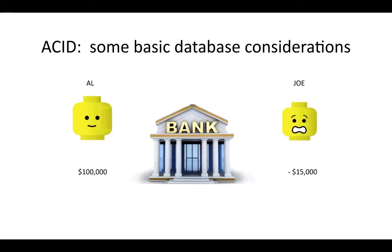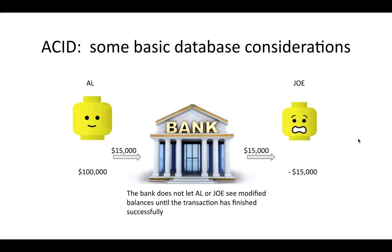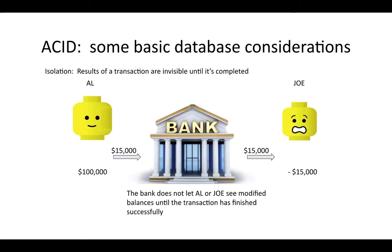For our third case: in the process of these transactions taking place, the bank doesn't necessarily want to show Al or Joe that the transaction is occurring mid-process, because if the transaction has to be aborted, it doesn't want them wondering what's happening to their accounts. Ideally the bank doesn't want to let Al or Joe see modified balances until the transaction has actually been finished successfully. This is what's termed isolation — the results of the transaction are invisible until it's completed.